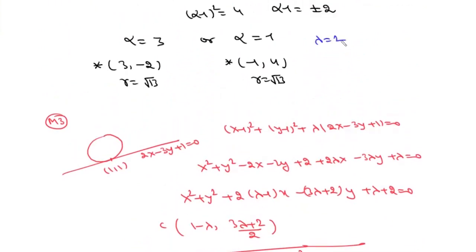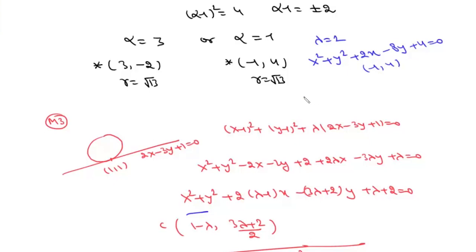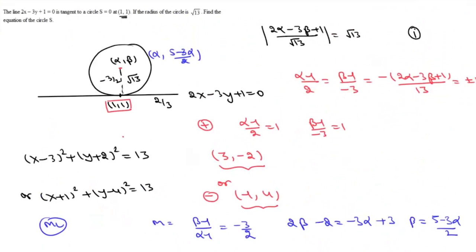If λ = +2, the equation becomes x² + y² − 2x + 8y + 4 = 0, with center (−1, 4). If λ = −2, the equation becomes x² + y² − 6x + 4y = 0, with center (3, −2). So these are the three ways to solve this question.